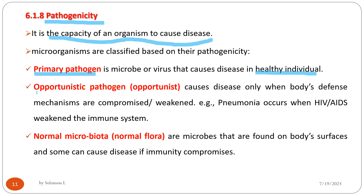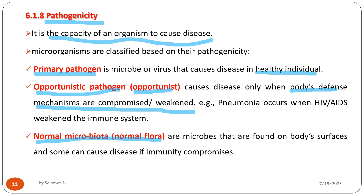The second category is opportunistic pathogens — pathogens that cause disease when the body's defense mechanism is compromised or weakened. For example, pneumonia can occur when HIV weakens the immune system. Normal flora or normal microbiota are microbes found on body surfaces; some can cause disease if the immune system is compromised.